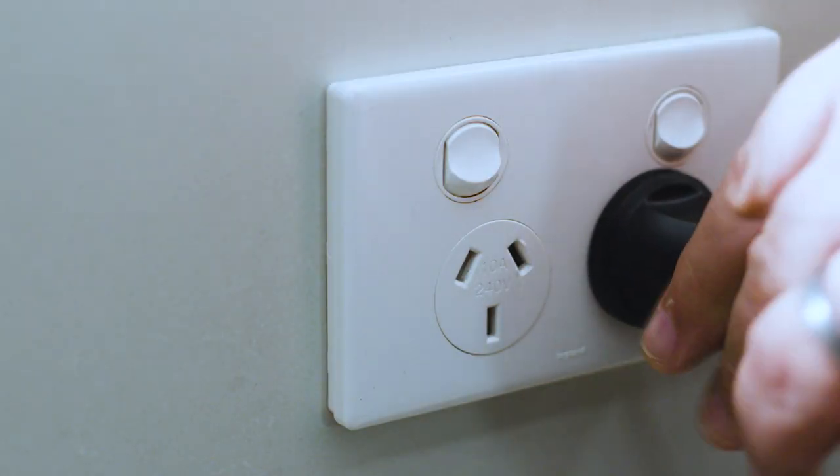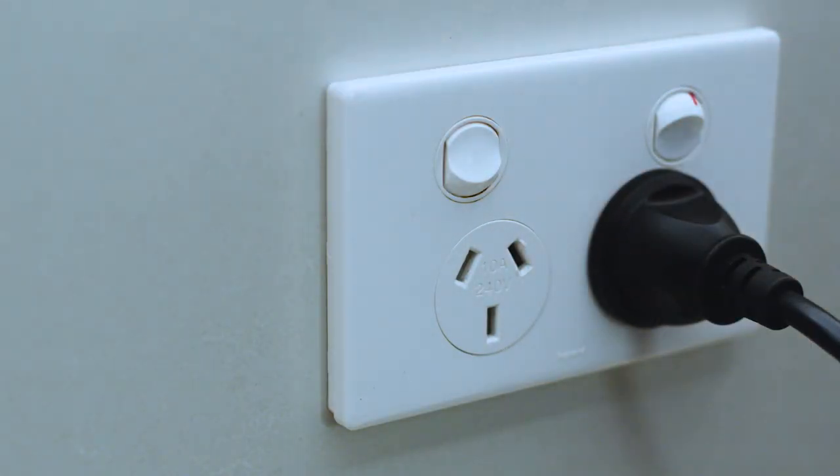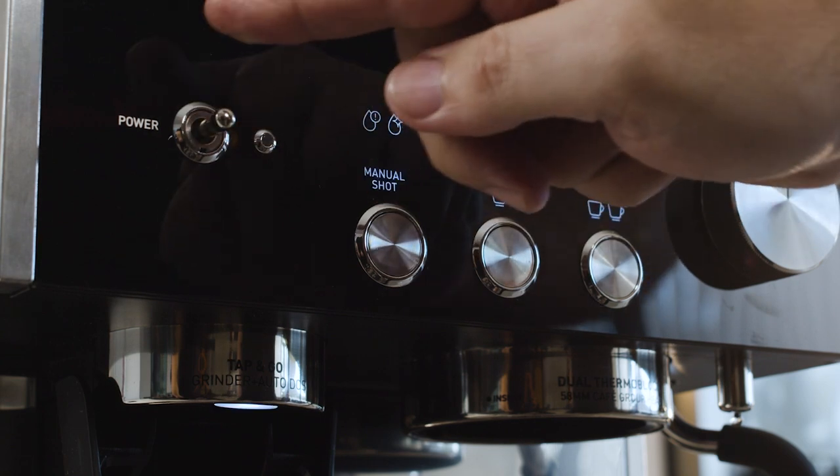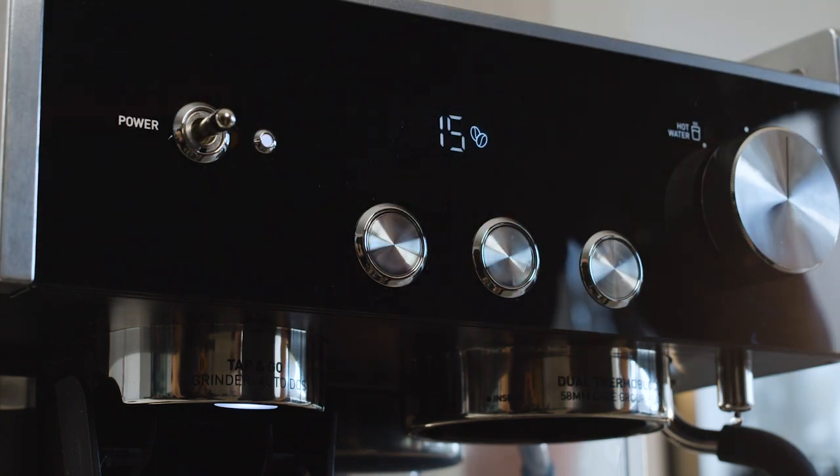Now it's time to insert the power plug into the outlet and switch the power on. To turn the machine on, simply push the toggle switch downwards. The light next to the power switch will pulse to indicate the machine is heating up. When the pulsing stops and the manual, one cup and two cup buttons are fully illuminated, the machine is ready to use.